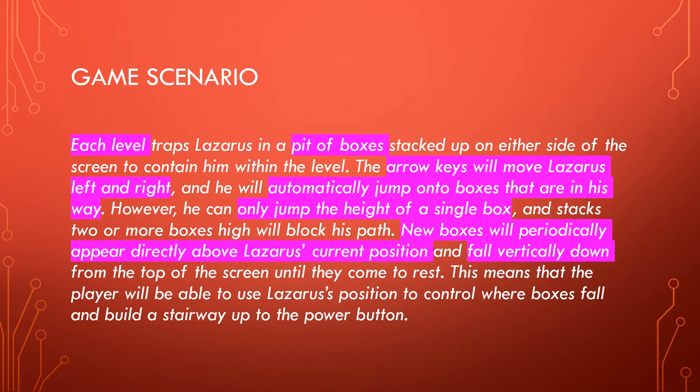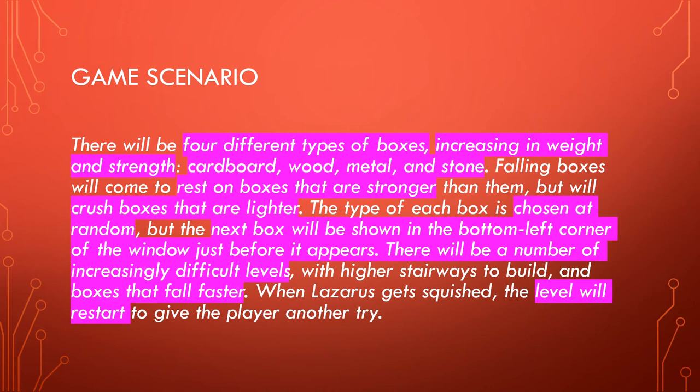New boxes will periodically appear directly above Lazarus's current position and fall vertically down from the top of the screen until they come to rest. The player can use Lazarus's position to control where boxes fall and build a stairway up to the power button. There are four different types of boxes increasing in weight and strength: cardboard, wood, metal, and stone. Falling boxes will come to rest on boxes that are stronger than them, but will crush boxes that are lighter than them.